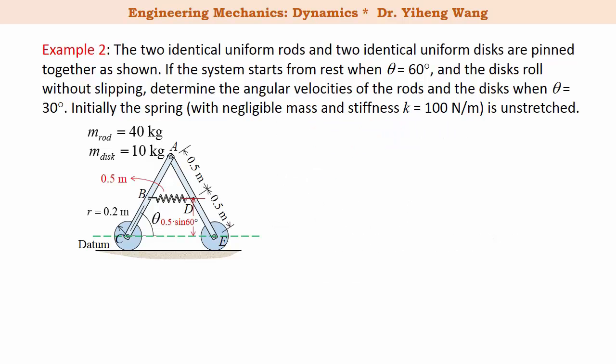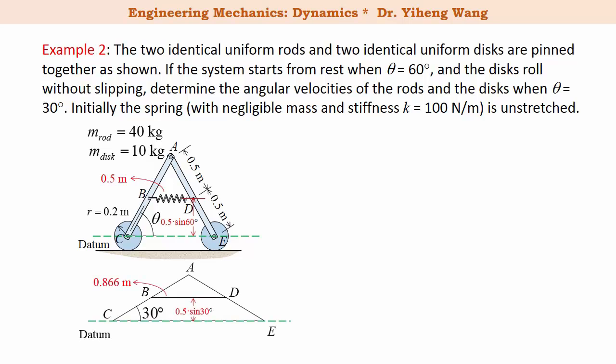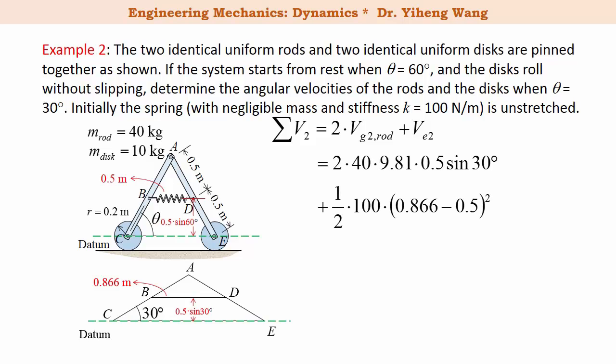Next, we sketch the final state of the system and determine the final total potential energy, which includes the gravitational potential energy of only the two rods as well as the elastic potential energy of the now-stretched spring. This evaluates to 203 joules.